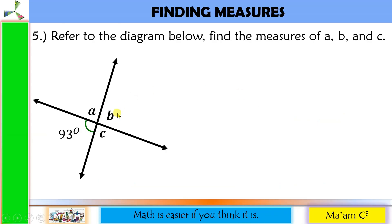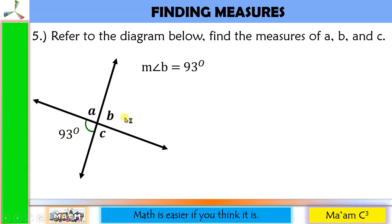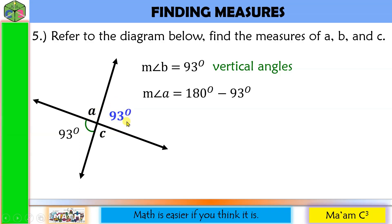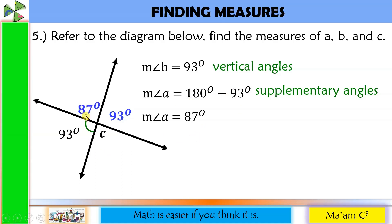Another one: We can solve right away for the measure of angle B, because angle B is opposite this angle and opposite angles are always congruent — they are vertical angles. So angle B is 93 degrees. This line is a straight line, creating 180 degrees. To solve for angle A, we subtract 93 from 180, because angle A and 93 degrees are supplementary angles. 180 minus 93 gives us 87 degrees.